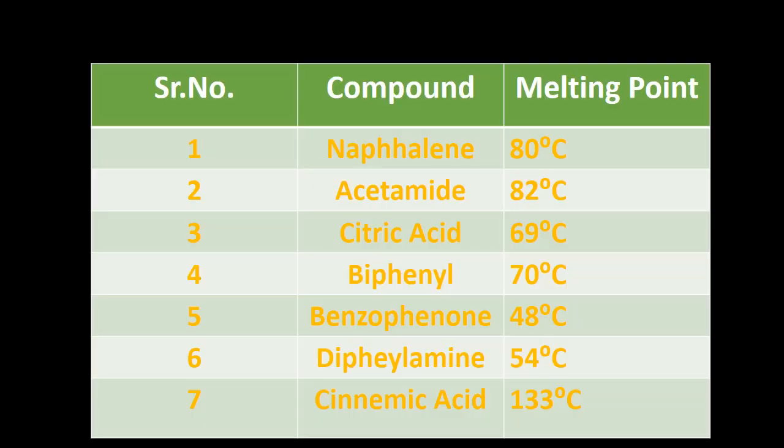These are the melting points of some important compounds. For naphthalene it is 80°C, acetamide is 82°C, citric acid is 69°C, biphenyl is 70°C, benzophenone is 48°C, diphenylamine is 54°C, and cinnamic acid is 133°C. Why am I giving this to you? Some important compound melting points should be known to you. And secondly, biphenyl's complete experiment you have to perform, exactly like we did naphthalene. The most important are naphthalene and biphenyl.